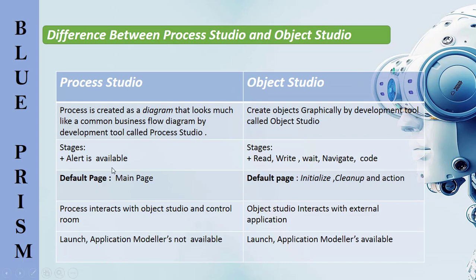In Process Studio, every process is defined using one or more pages, each of which is similar to a business object action, and each page contains some number of stages and data items. Whereas in Object Studio, each action in a business object can contain stages and data items, similar to the process.